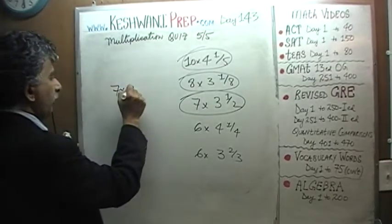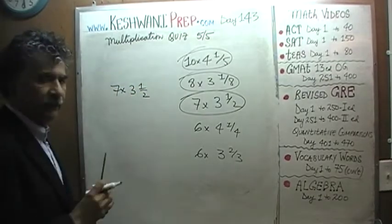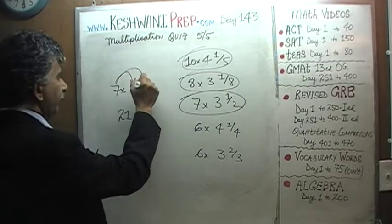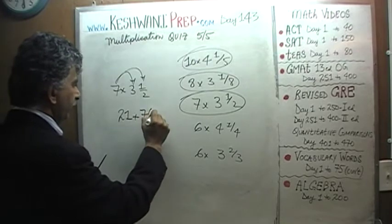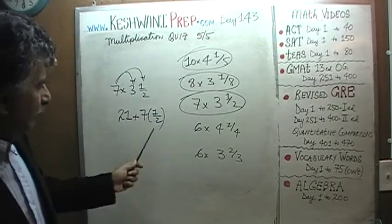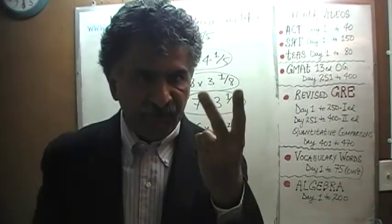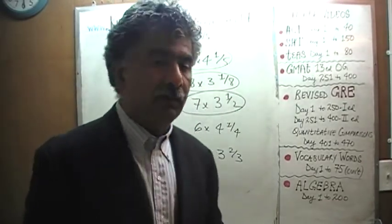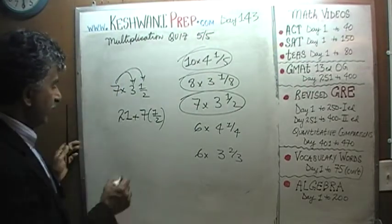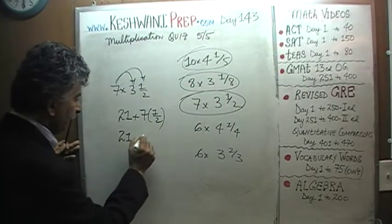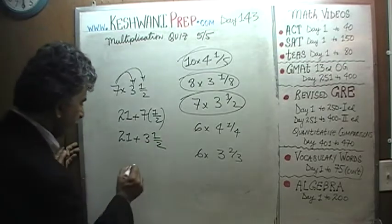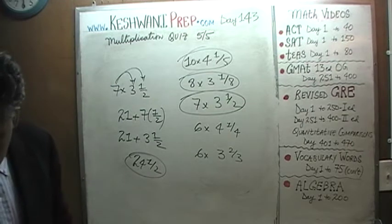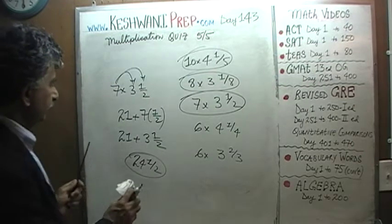Seven times three and a half: seven times three is twenty-one, and seven times one half is seven halves. Two halves make one, four halves make two, six halves make three — seven halves is three and a half. So twenty-one plus three and a half: the answer is twenty-four and a half.